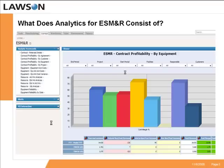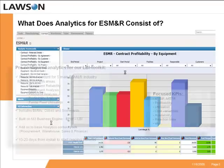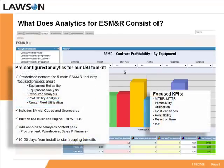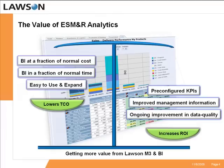In summary, Analytics for ESM&R consists of predefined content for five main industry-focused process areas. It also includes business measurement models to bring the right information together, and it provides a number of scorecards to get the right information to the right person. Lawson Analytics for ESM&R gives you meaningful business value faster because you'll know your business better.